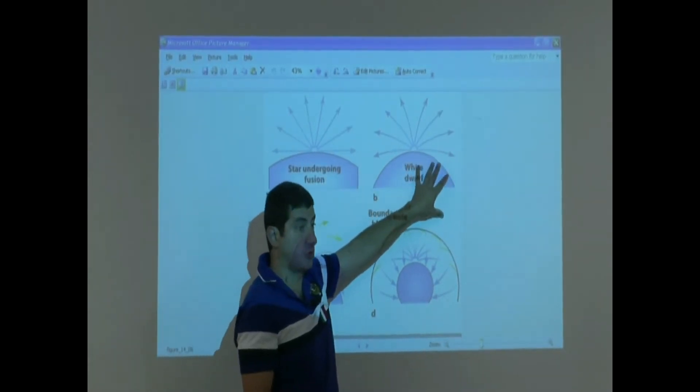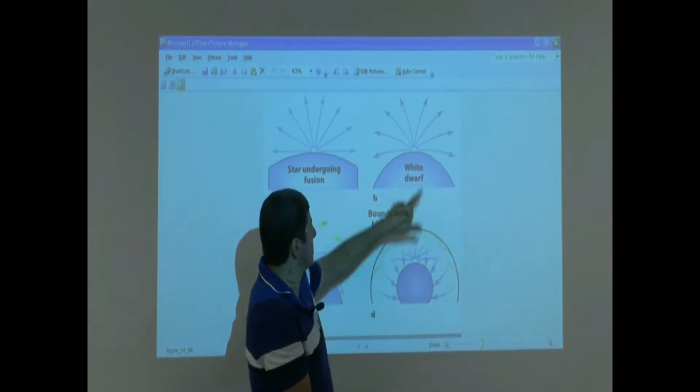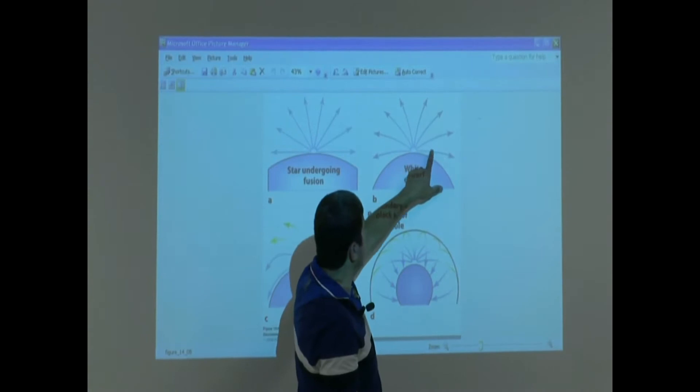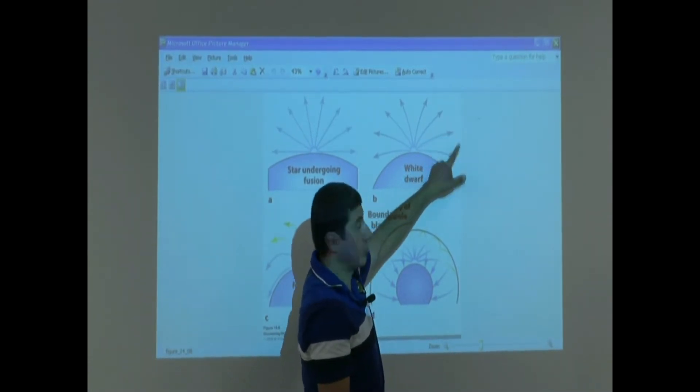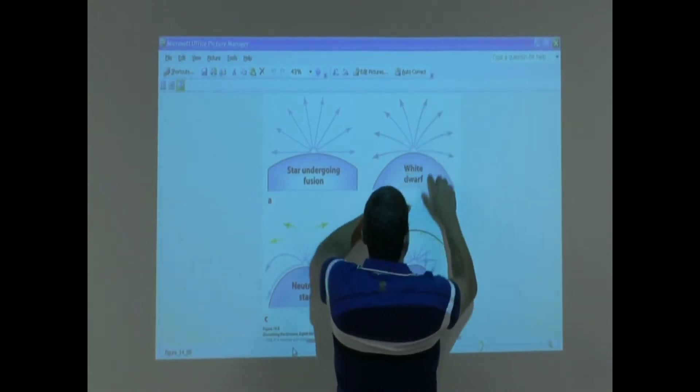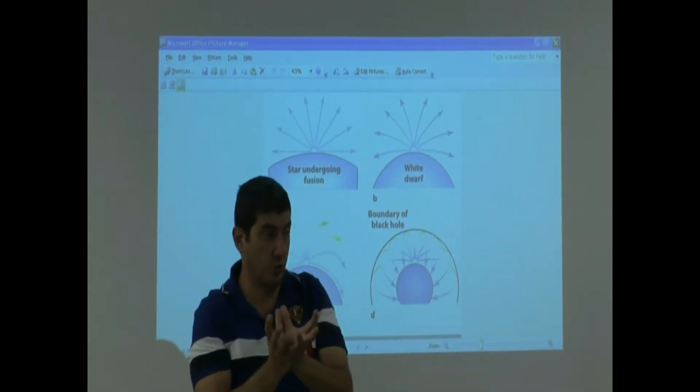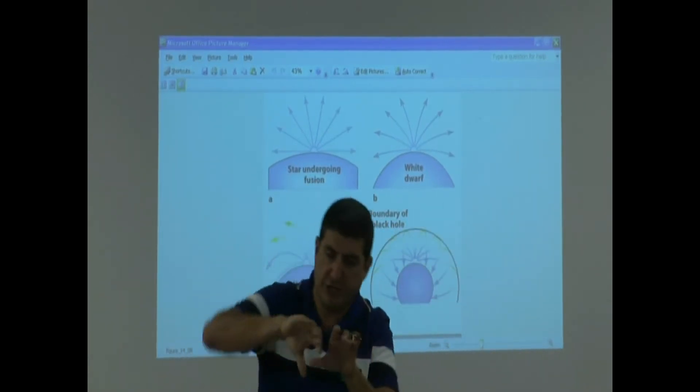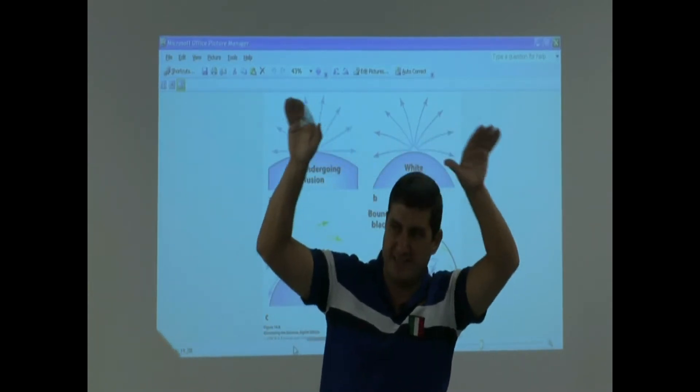But the bending of the light around the regular star is not that significant. Then you go to a white dwarf. White dwarf is denser, very dense. If you shine a light beam from a white dwarf, you're expecting the light beam to bend a little bit more. You see here? The light beam is bending. That means the curvature of space created by the white dwarf curves the space around it so much that it causes the light beam to deflect and bend.